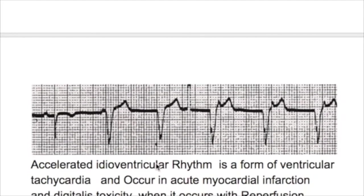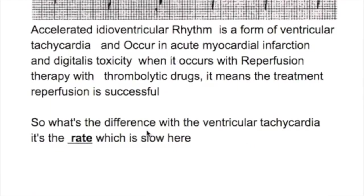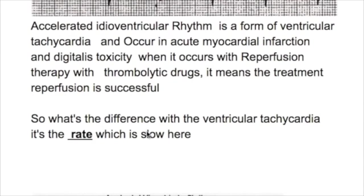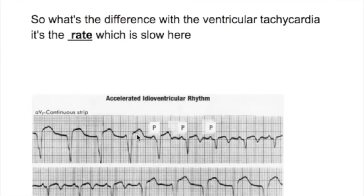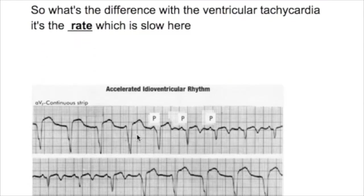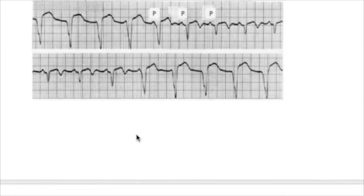The difference between VTach and accelerated idioventricular rhythm is the rate — the maximum rate is 100 beats per minute compared to VTach. These ECGs shown here also demonstrate accelerated idioventricular rhythm.